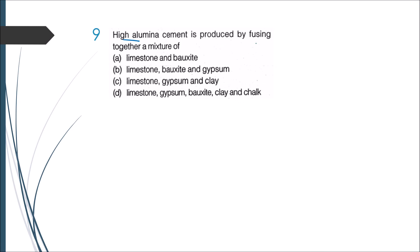Therefore if you come to this question again: high alumina cement is produced by fusing what? We don't need any gypsum here, so I'm going to omit anything that has gypsum. Therefore I'm getting my answer as limestone and bauxite, which is the correct answer.